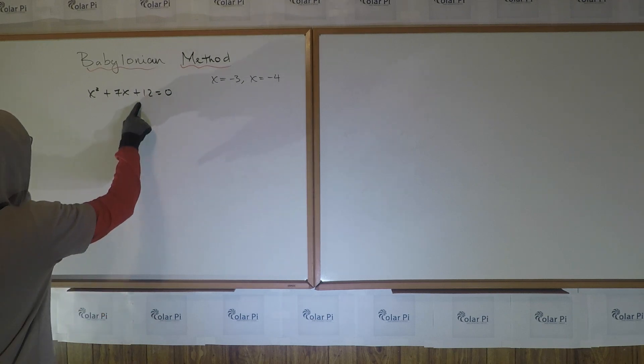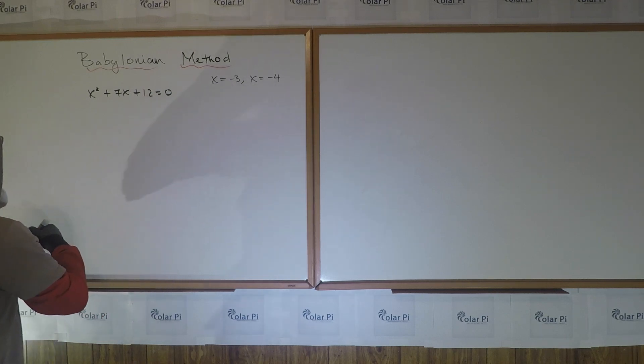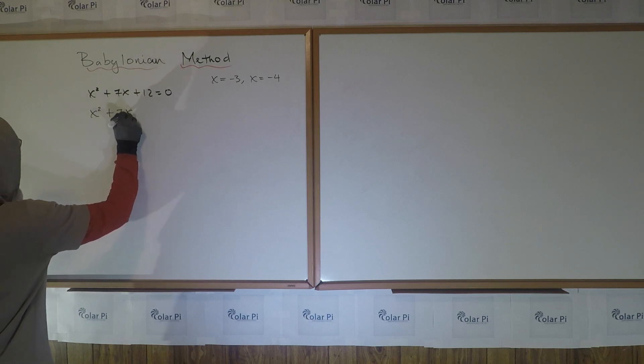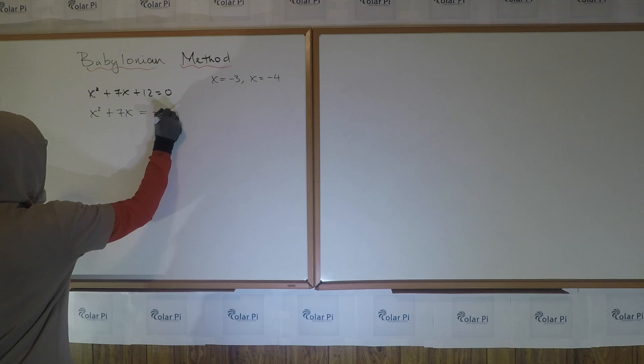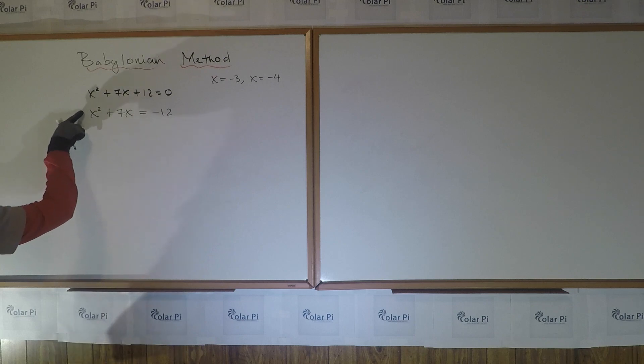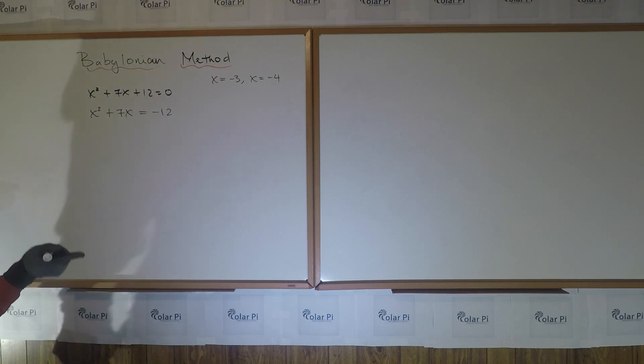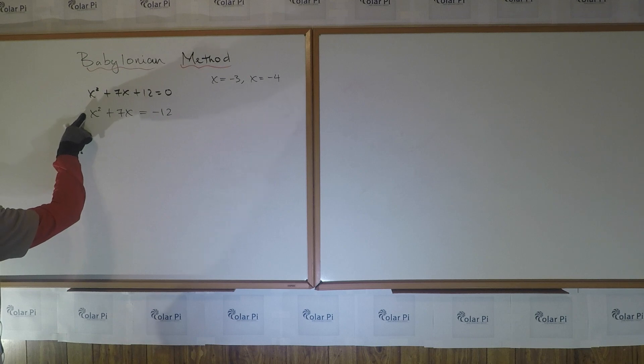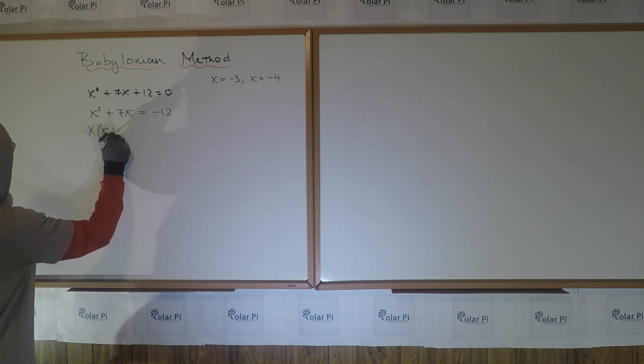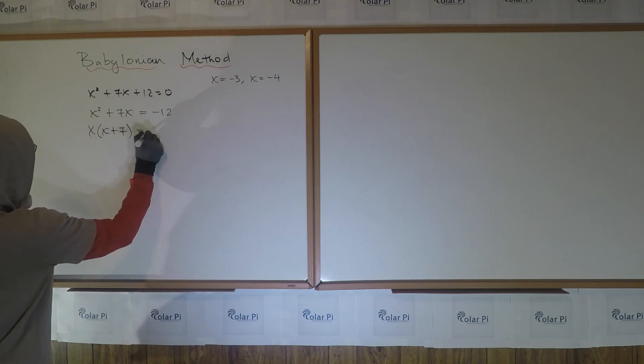Okay, so the Babylonian method always starts by moving this constant term to the right side. So that means I have x² + 7x = -12. From here, factor the two terms on the left side. That's if the leading coefficient is 1. I'll show you what to do in our second example when the leading coefficient is different from 1. So factoring these two guys, we see that we can write the left side as x(x + 7) = -12.